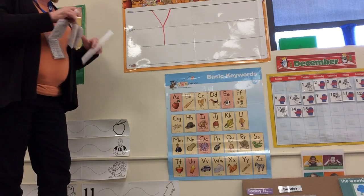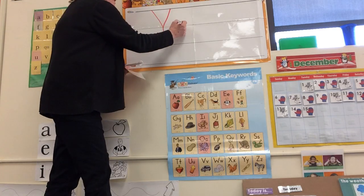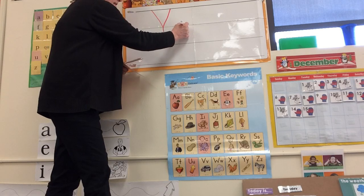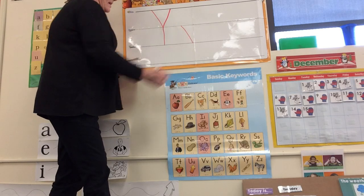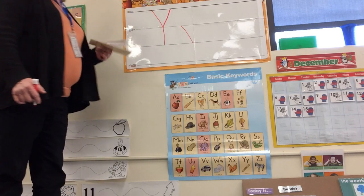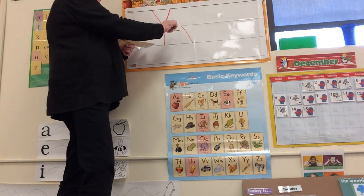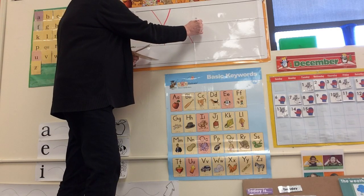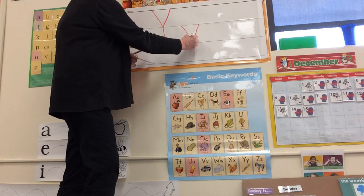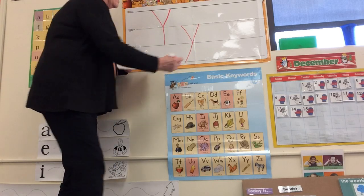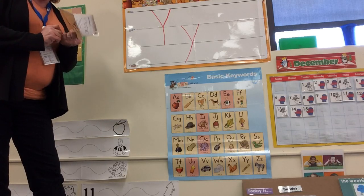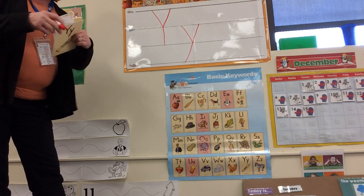Lowercase Y. We're gonna start on the plane line and we're gonna slide down, and then we're gonna go over a little space on the plane line, and then we're gonna cruise on all the way down to the worm line. And that's the lowercase Y.